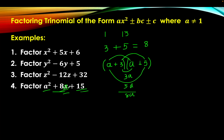Supposing we did not correct the typo and the trinomial were a squared plus 8x plus 15 — since there is no way to have 8x as the middle term with the variable a, this means the trinomial cannot be factored. In that case, the answer would be prime polynomial.